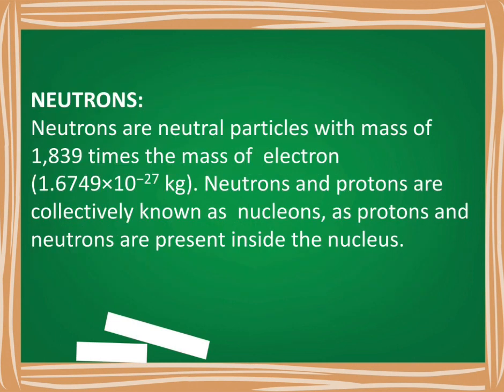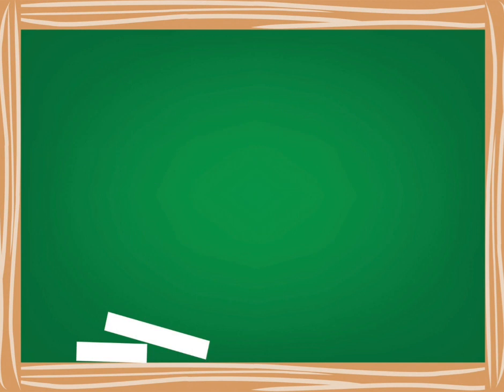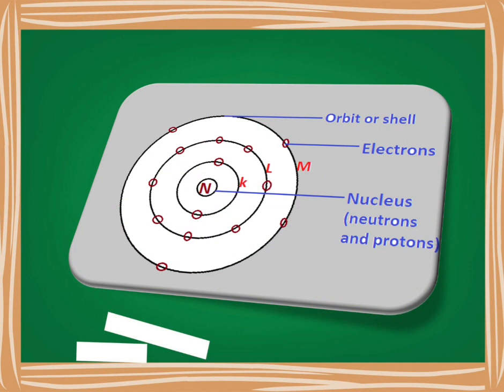The third particle is the neutron. Neutrons are neutral particles — they do not carry any charge. They have a mass of 1.6749 × 10⁻²⁷ kg, which is 1839 times the mass of an electron. Neutrons and protons are collectively known as nucleons because they are present inside the nucleus. The net charge of the nucleus is positive because of the positive charge carried by protons.